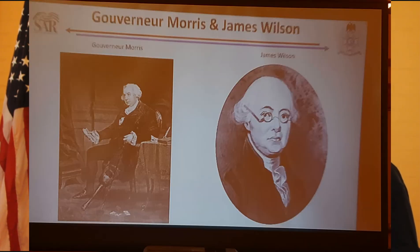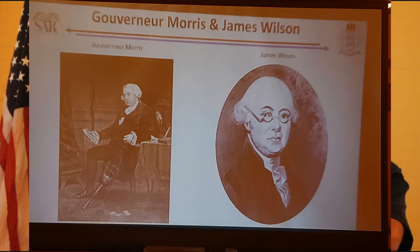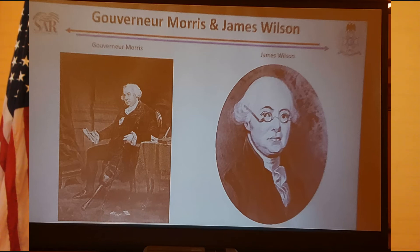Two of the people there were notable. One was Gouverneur Morris from New York—not Robert Morris the financier, but Gouverneur Morris. He had a pegged leg, was a very charismatic guy, and got up and spoke more often at the Constitutional Convention than anybody else. He delivered some very haranguing speeches about slavery.